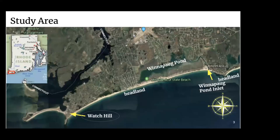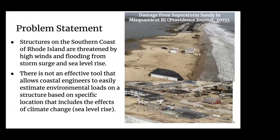I'm going to begin with the study area. It contains the entire southern coast of Rhode Island from the Winnipeg Pond Inlet all the way west to Watch Hill and Knob Street Point. This stretch of land is a good representation of Rhode Island because it contains headlands, coastal ponds, and densely populated areas, which are all relevant when computing load values and damage to structures. Overall, structures on the southern coast of Rhode Island are subjected to the threat of high wind velocity and flooding from storm surge and sea level rise. Unfortunately, there's not an effective tool that allows structural and coastal engineers to easily estimate environmental loads in response to sea level rise — our project aims to solve this issue.